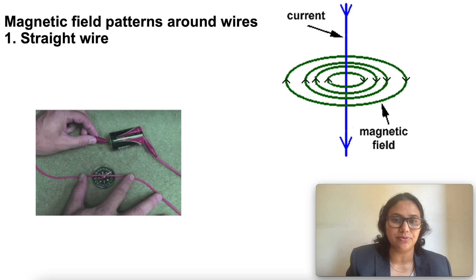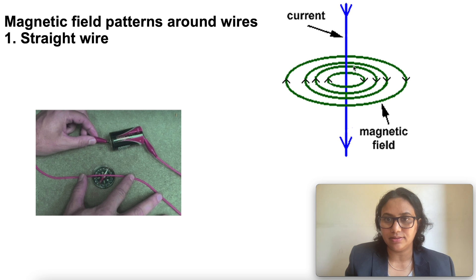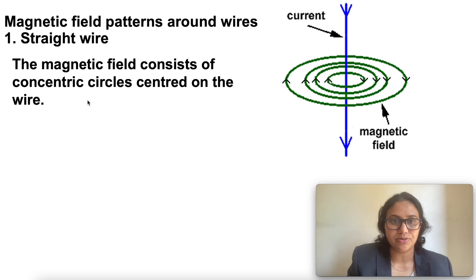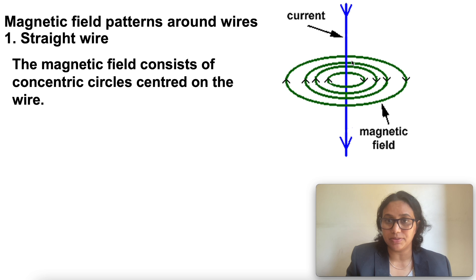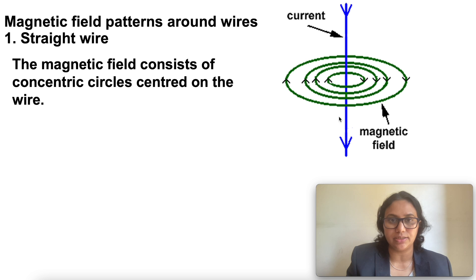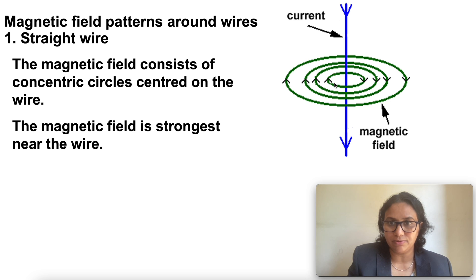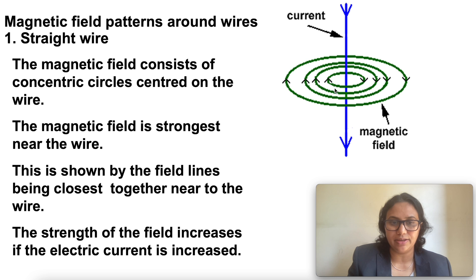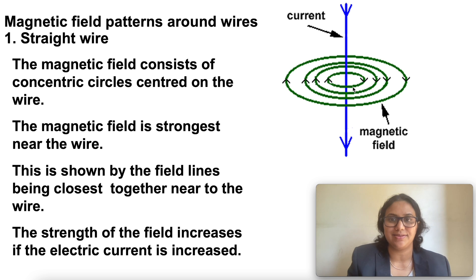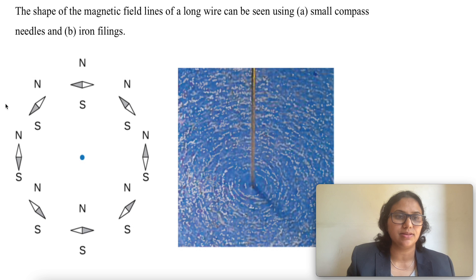The direction of magnetic field lines gets reversed if the direction of current through the straight copper wire is reversed. For a straight conductor, the magnetic field consists of concentric circles centered on the wire, as seen in this diagram. These concentric circles represent the direction of the magnetic field lines around the straight conductor. The magnetic field is strongest near the wire, and its strength increases if the electric current also increases.